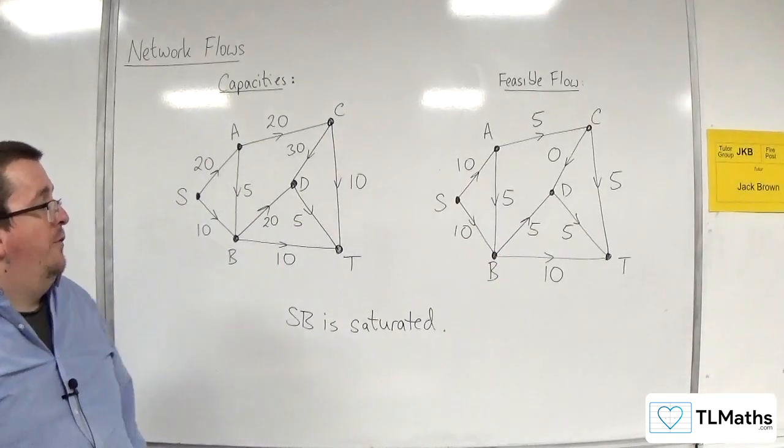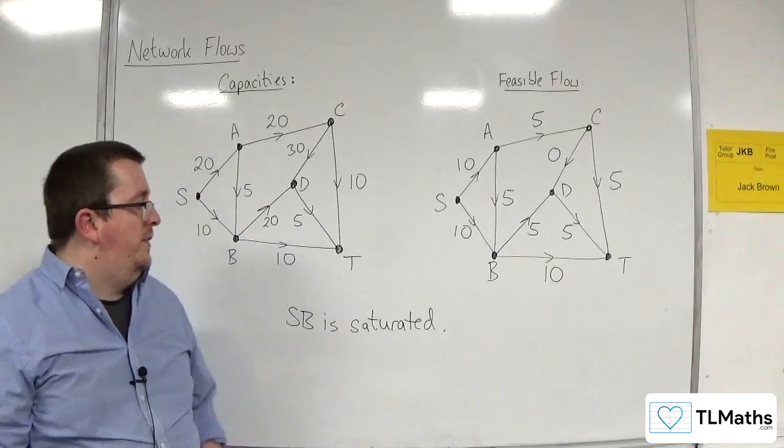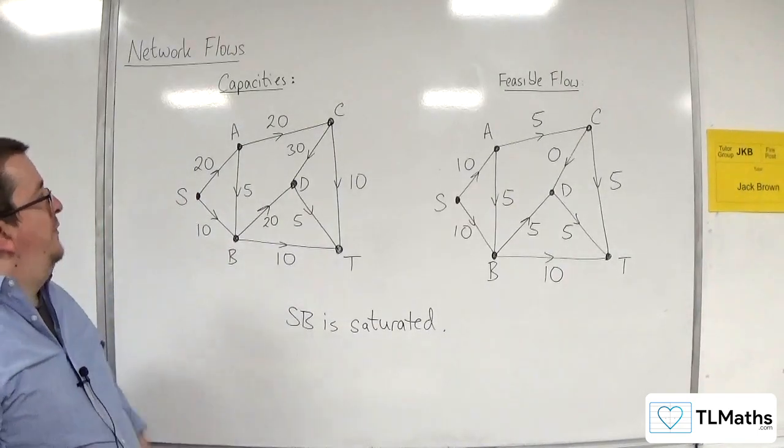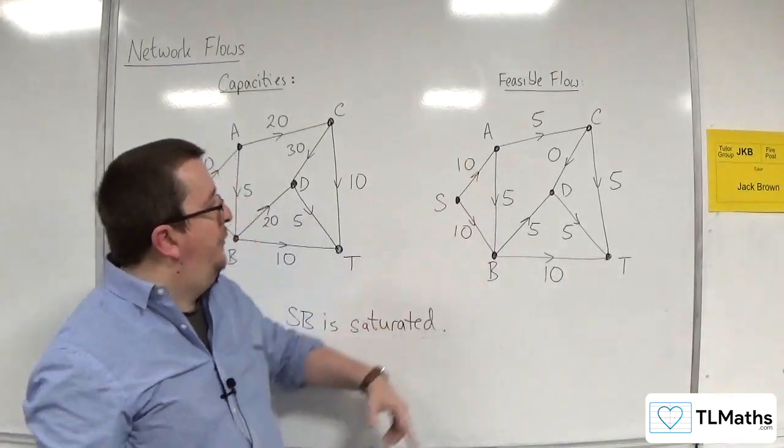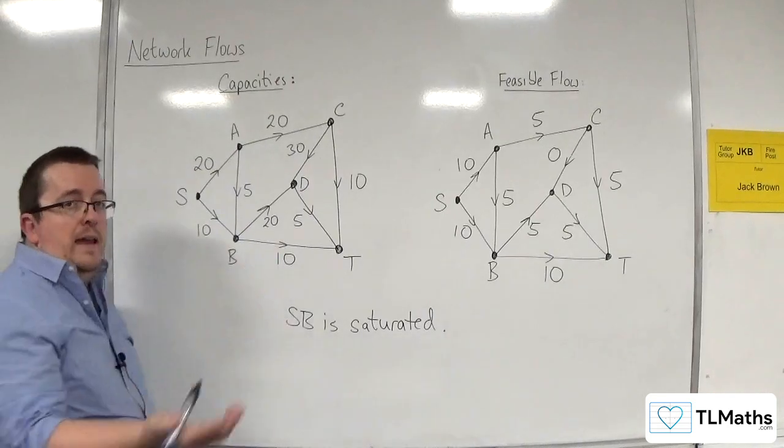Now, some of the arcs are saturated. S, B is saturated. For example, A, B is also saturated. But S, A isn't.